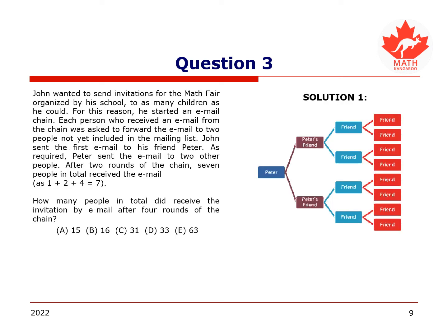Here is the first solution. Draw a tree diagram to keep track of the number of people who received email invitations. After three rounds, we have 1 (Peter), plus 2 of his friends, plus 4 people, and then plus 8 people from those 4 last people, which equals 15. So 15 people have received the email invitation. To represent the situation after four rounds, we extend the tree diagram by one more column. This column will contain 16 boxes, as we have 2 people per person and there were 8 people in the last round, giving 16 additional people. Hence, a total of 1 plus 2 plus 4 plus 8 plus 16 equals 31.